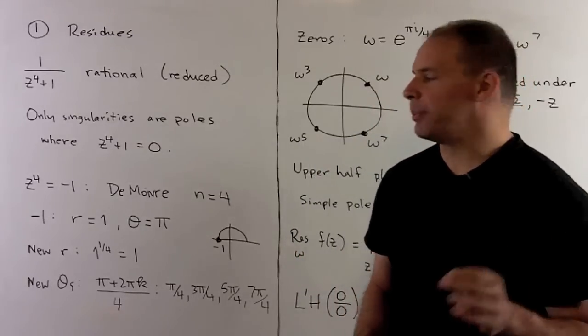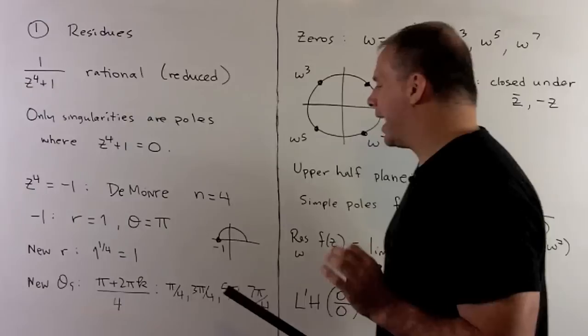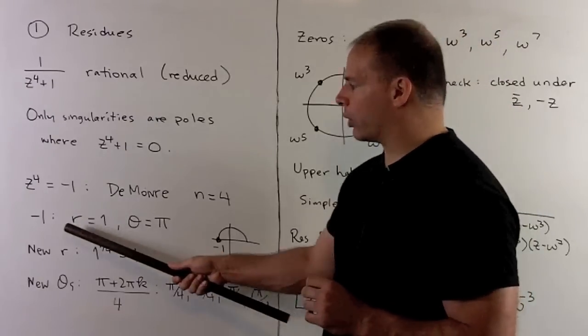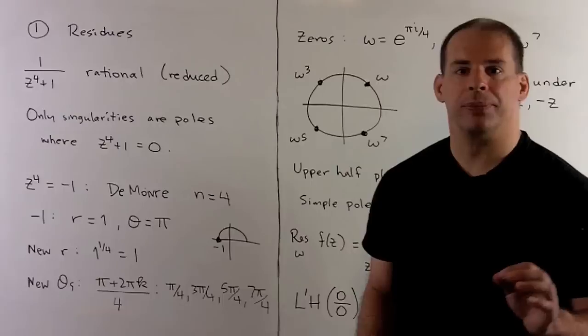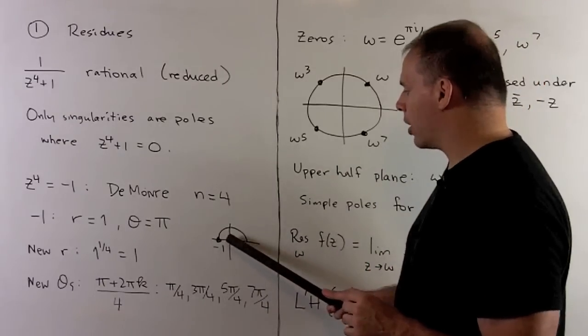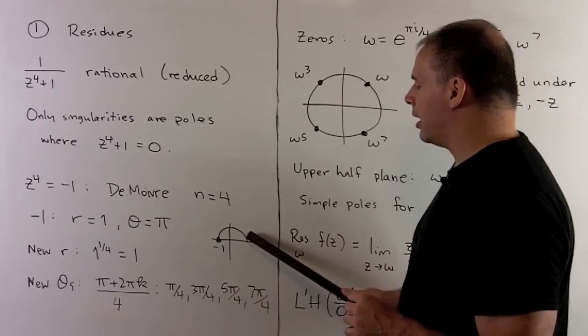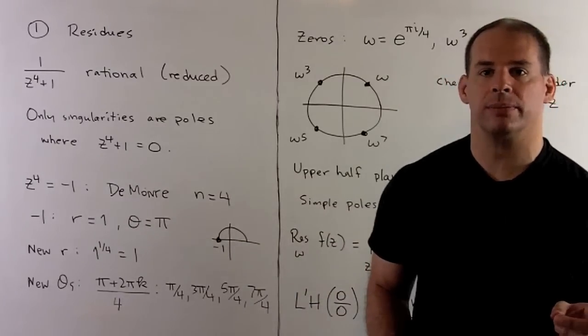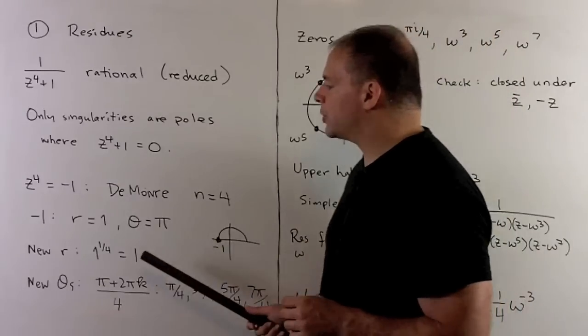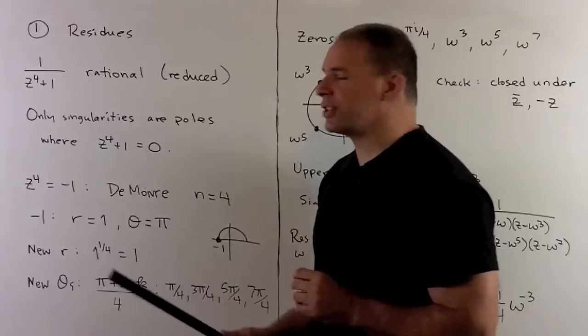We can solve this using De Moivre's theorem with n equal to 4. We find the polar decomposition of minus 1. We're going to have the modulus, or the R, is equal to 1, and then the angle is going to be equal to pi. So, the idea is we go out by R equal to 1, and then just rotate by pi, and then we land on minus 1 on the real axis. Now, recipe for our new roots.